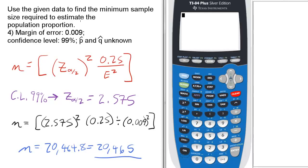We're going to use the given data to find the minimum sample size required to estimate the population proportion. Margin of error is 0.009, confidence level is 99%, p hat and q hat are unknown.